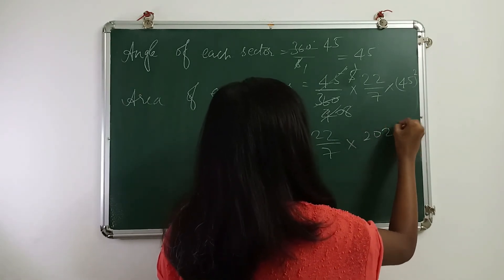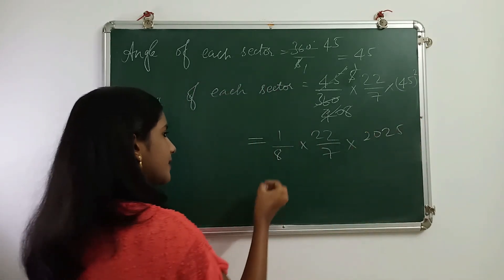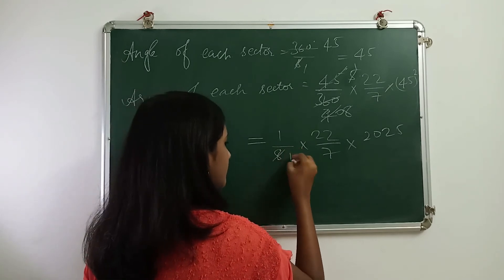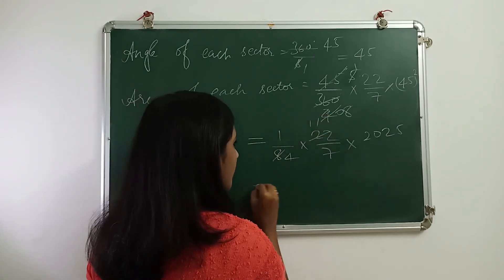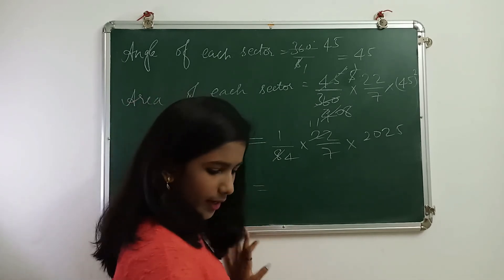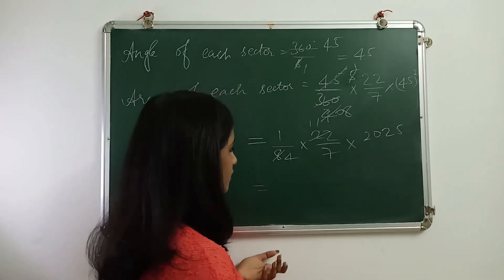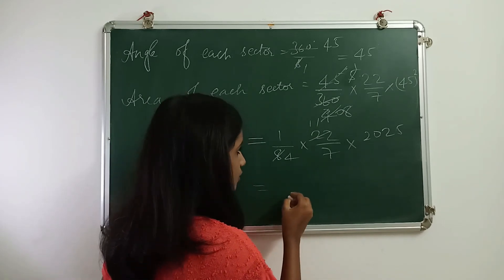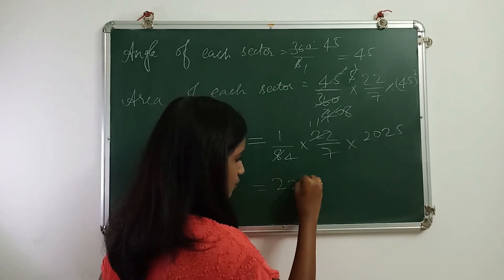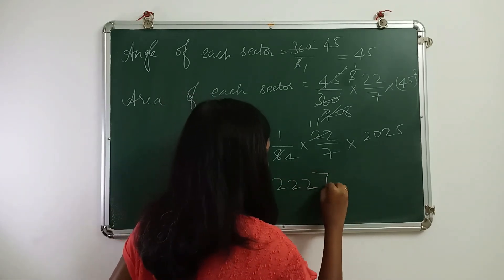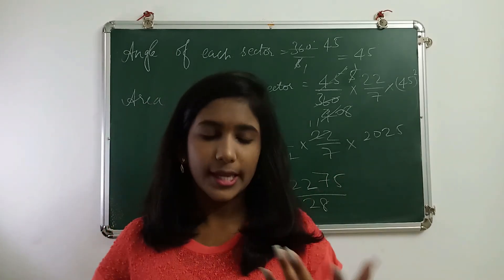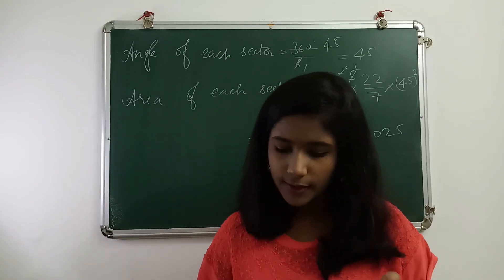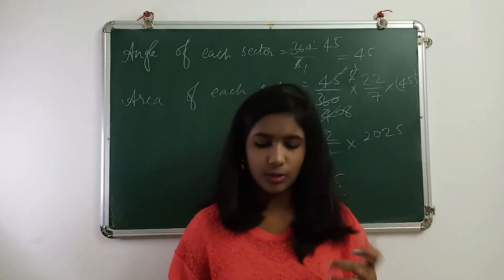Now, canceling that, we get this will be 4 and this will be 11. So, 11 into 2025 by 7 into 4. So, 11 into 2025 is 22275 by 28. This is the area of each sector in the umbrella having the radius of the rib to be 45 centimeters.